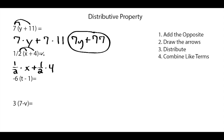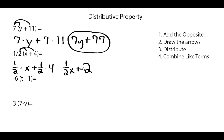Now we can simplify. One-half times x gives us one-half x. Bring our addition sign. And then one-half times 4 gives us 2. Last step is to combine like terms. In our first term we have an x, in our second term we do not have a variable. So we cannot combine any terms, and our final answer is one-half x plus 2.